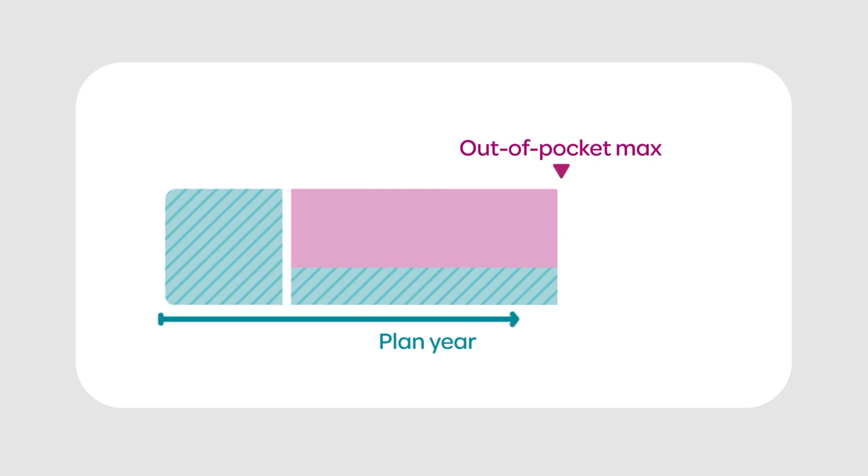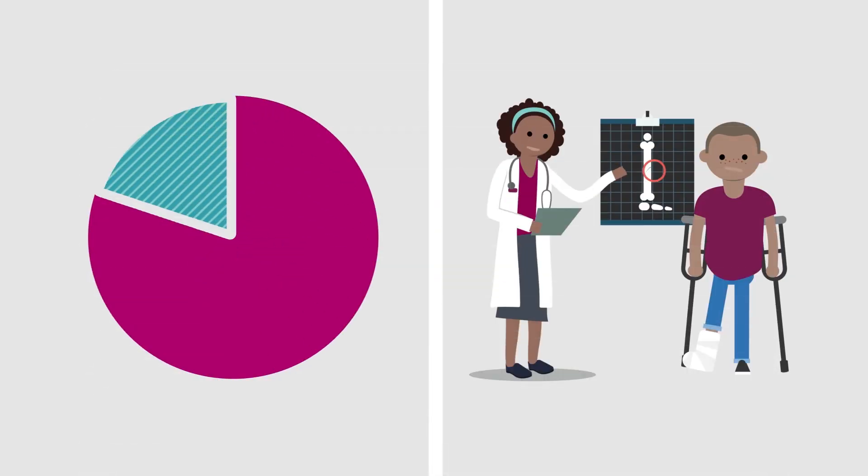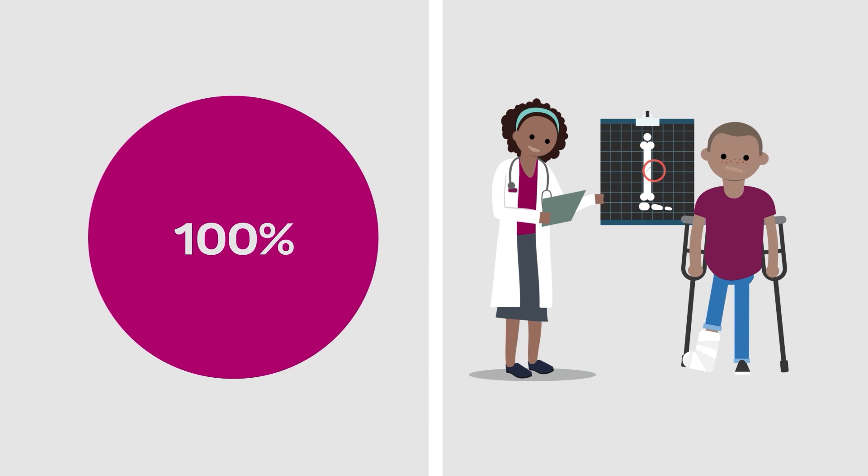Out-of-pocket max. This is the maximum amount of money you pay for covered services during your planned benefit period, usually over the course of a year or a benefit year. Once you've paid your out-of-pocket max, your insurance will pay 100% of your covered expenses.